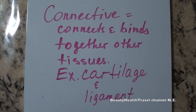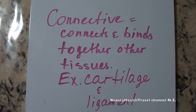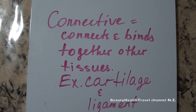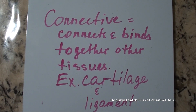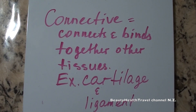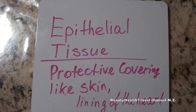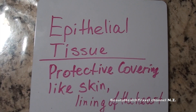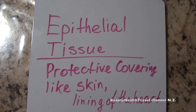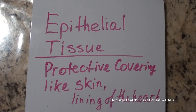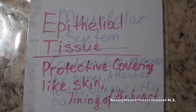Connective tissue connects and binds together other tissues. Examples would be cartilage and ligament. Epithelial tissue is protective covering like skin, lining of the heart, and other parts of the organs.